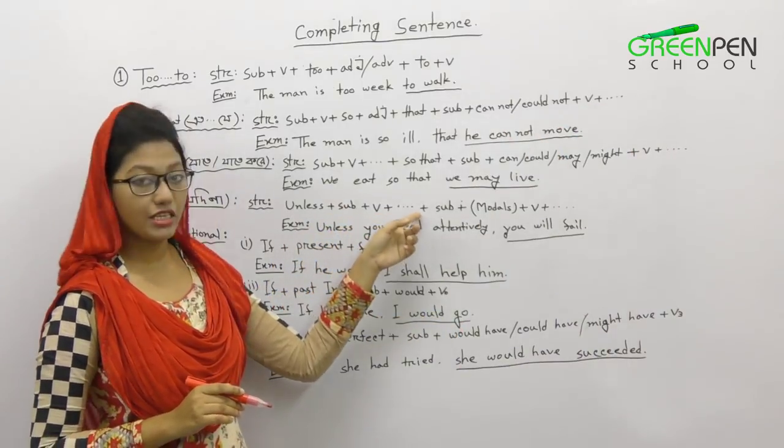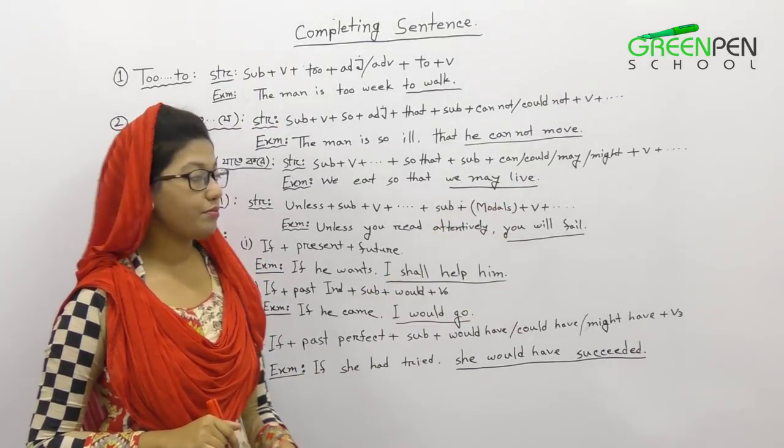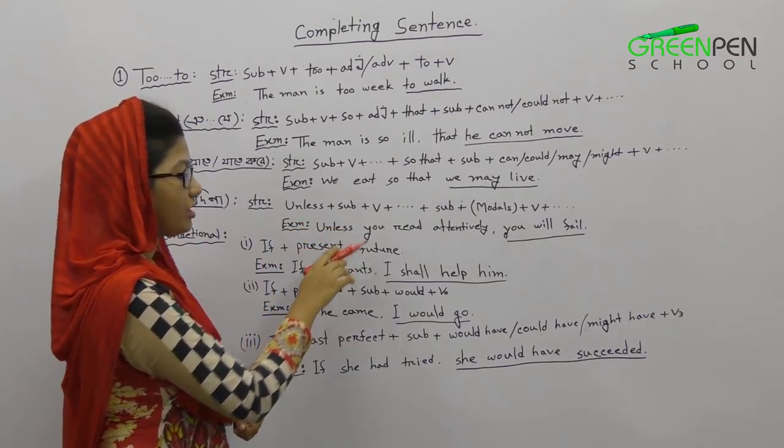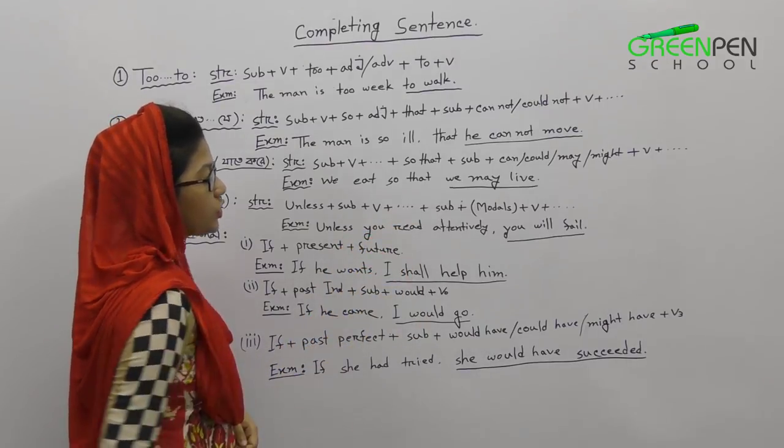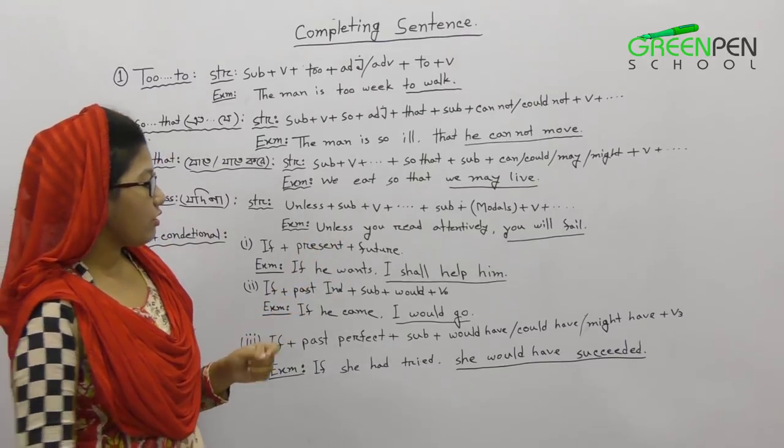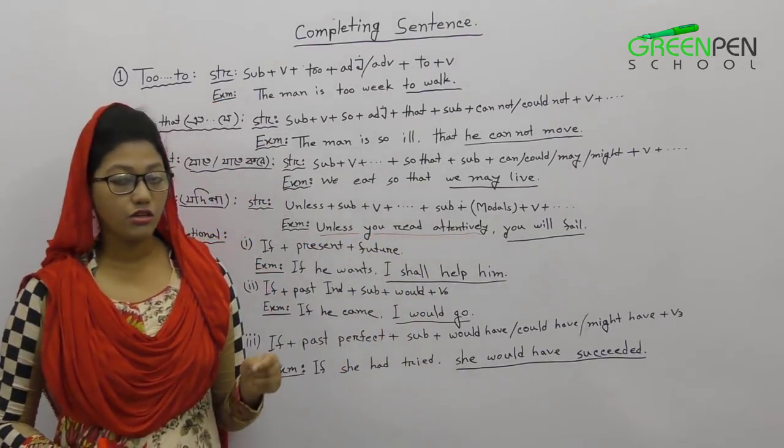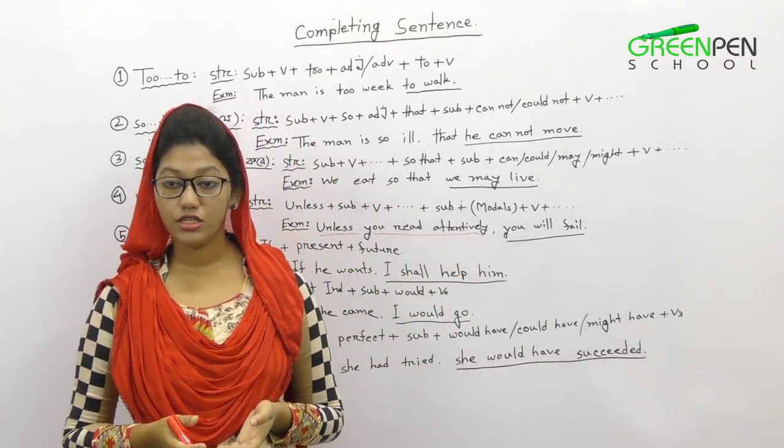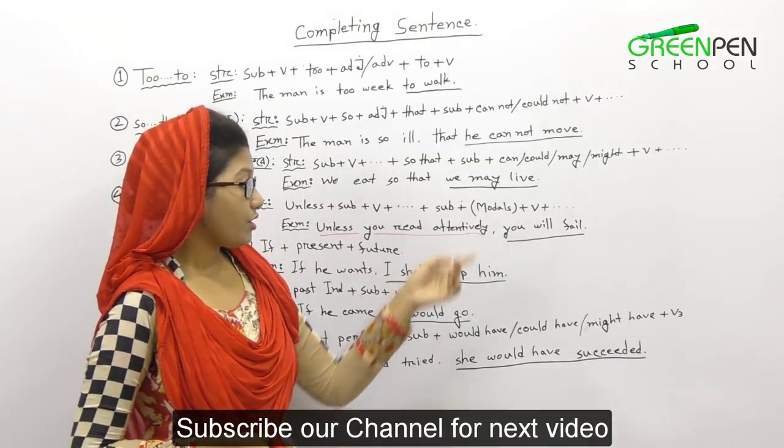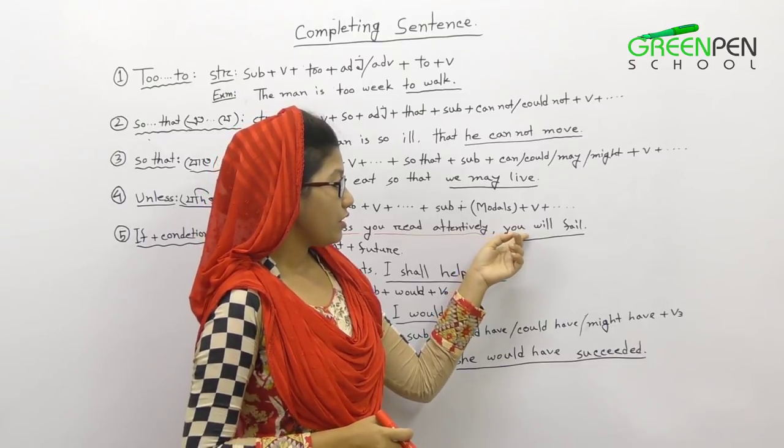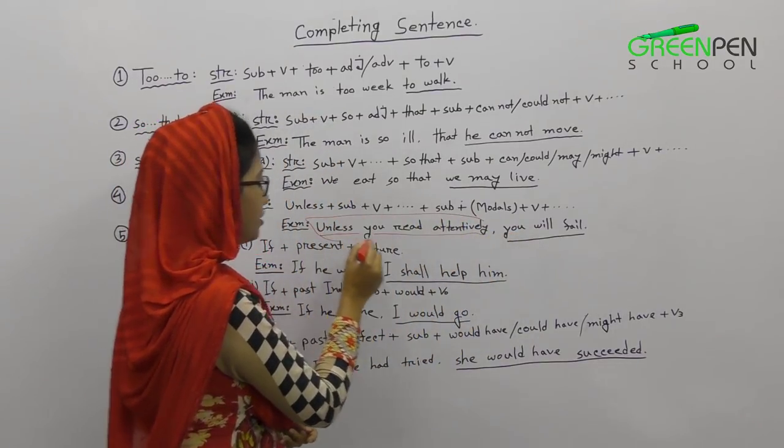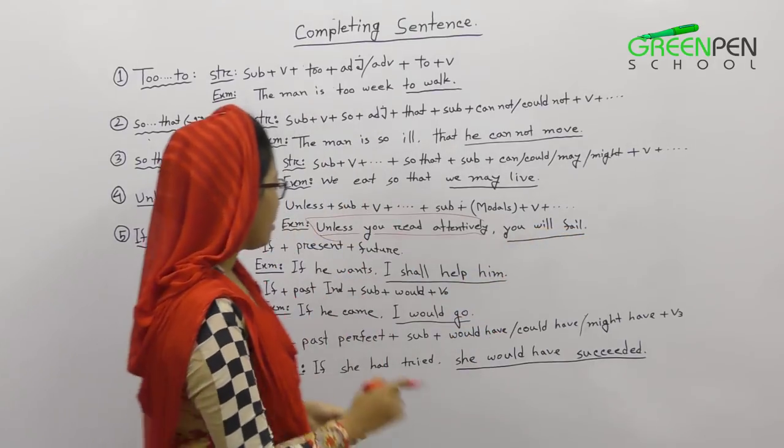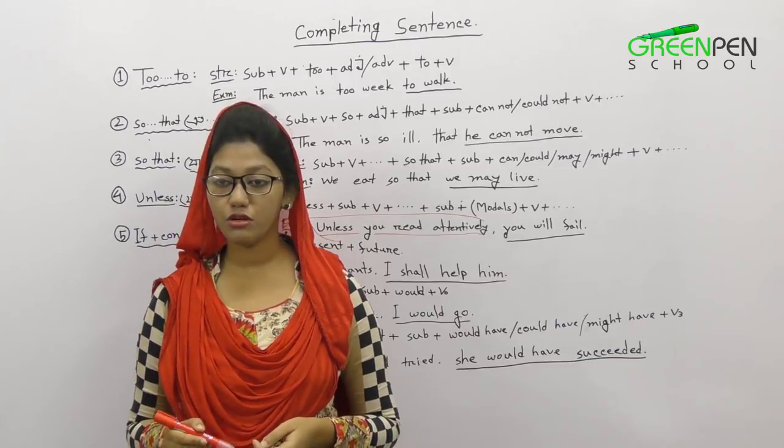Unless plus subject plus verb plus extension plus subject plus modals plus verb plus extension. For example, unless you, the subject is you, the verb is read, and the suitable adverb is attentively. The next step is unless you read attentively. We have to think about the result. The result is failure. So unless you read attentively, you will fail.